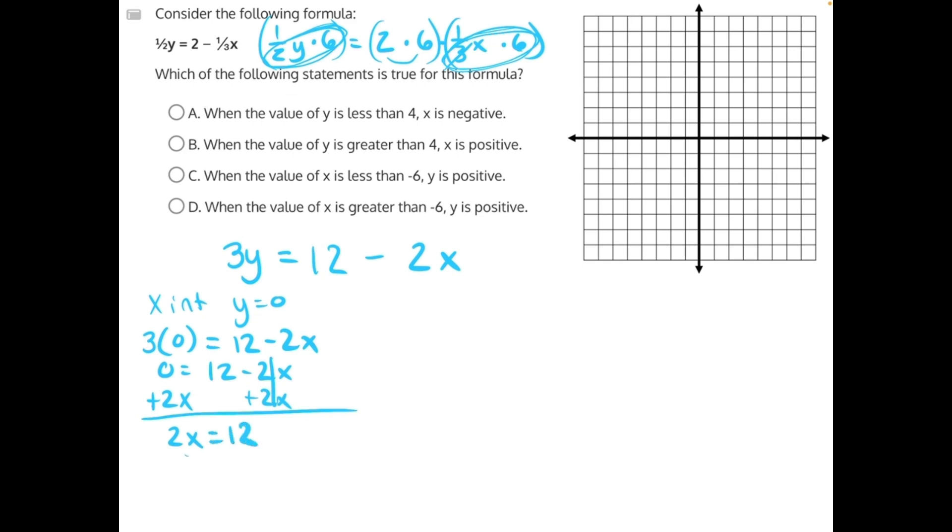And then 2 is being multiplied to x, so the opposite operation is division. These 2s will cancel, giving us x equals 12 divided by 2 is 6, where the coordinate point 6 comma 0.